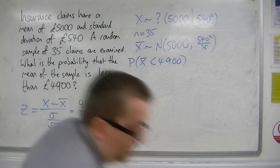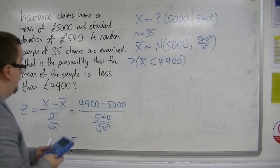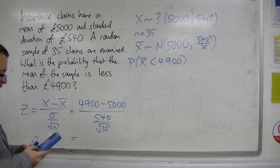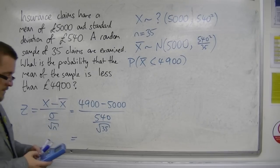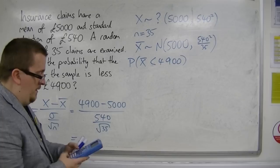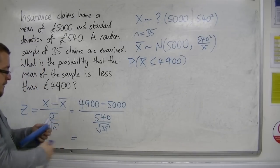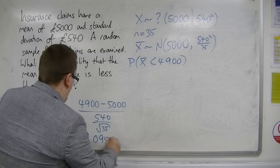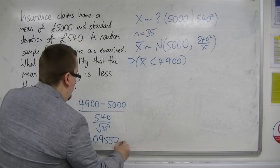So if we plug that into our calculator, we get 4,900 take away 5,000, divided by 540, divided by the square root of 35, which is minus 1.09557.